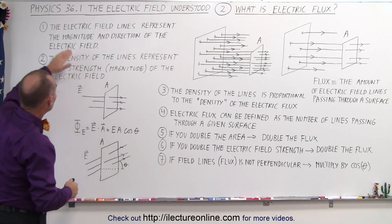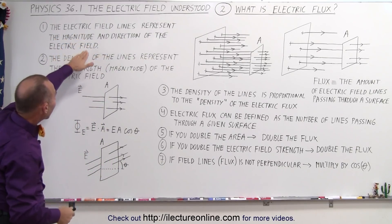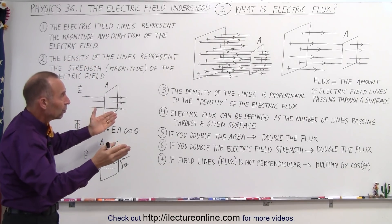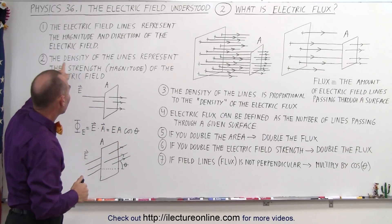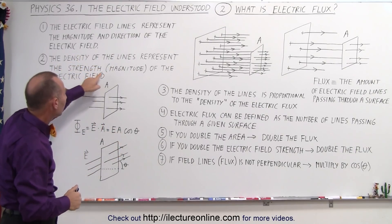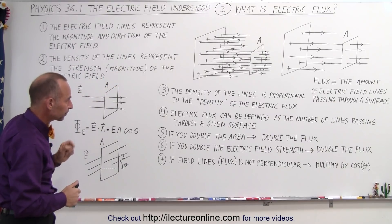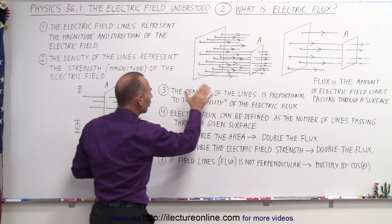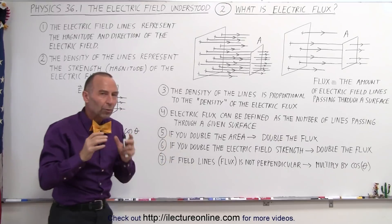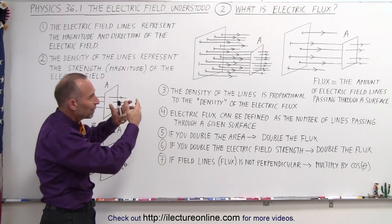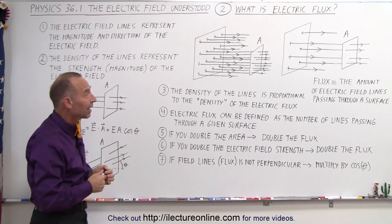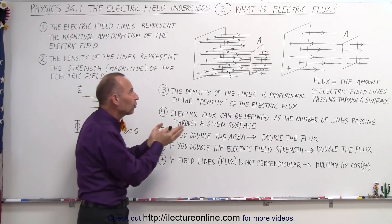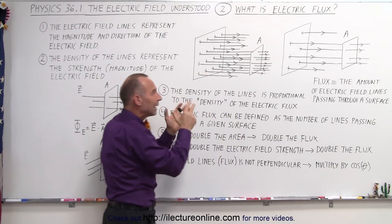Going back to the definition: the electric field lines represent the magnitude and direction of the electric field. The direction of the arrows is the direction of the electric field, and the magnitude is determined by the density of those lines — the density of the lines represents the strength or magnitude of the electric field. Now here's where we see the analogy: the density of the lines is proportional to the density of the electric flux. So we can almost envision electric flux as being represented by those very same electric field lines, except we only tend to talk about flux as the quantity of those lines going through the area that is set up there.